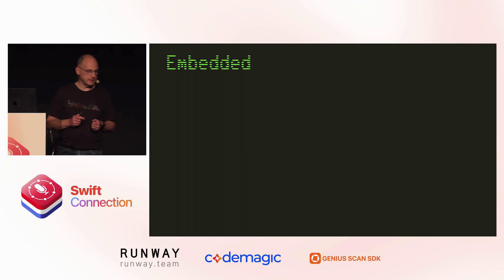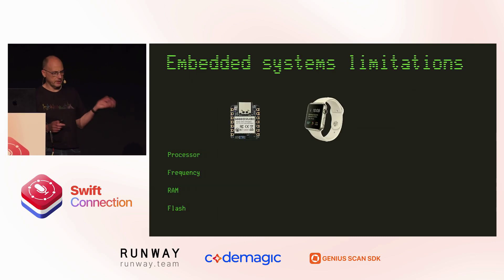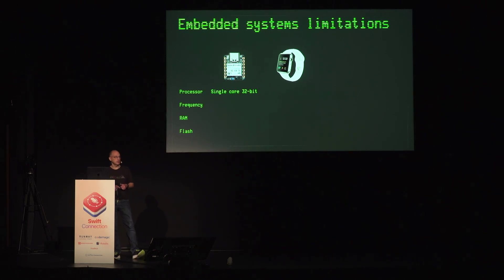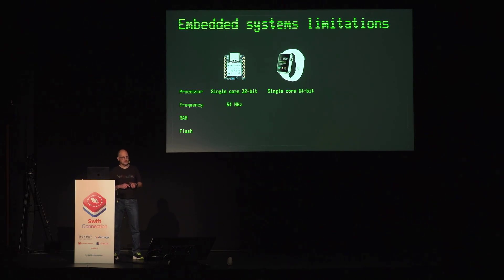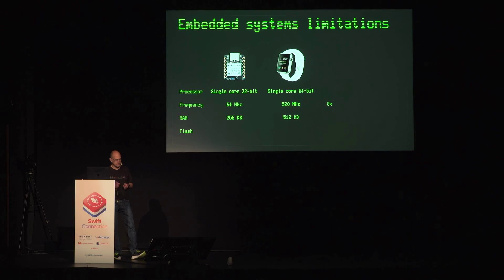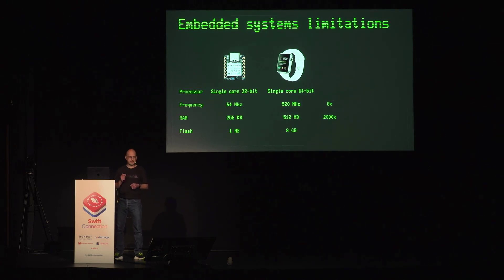Let's first take a look at embedded and some of its limitations. I want to compare a small embedded chip — an RF chip used in the Apple TV remote control — with an Apple Watch Series Zero, the original one released nearly 10 years ago. In terms of processor, we're looking at single core 32-bit versus 64-bit. Clock speed: 64 megahertz versus 520 megahertz — an eight times difference. Memory: 256 kilobytes versus 500 megabytes — that's 2,000x. And in Flash: one megabyte versus eight gigabytes — so 8,000x.